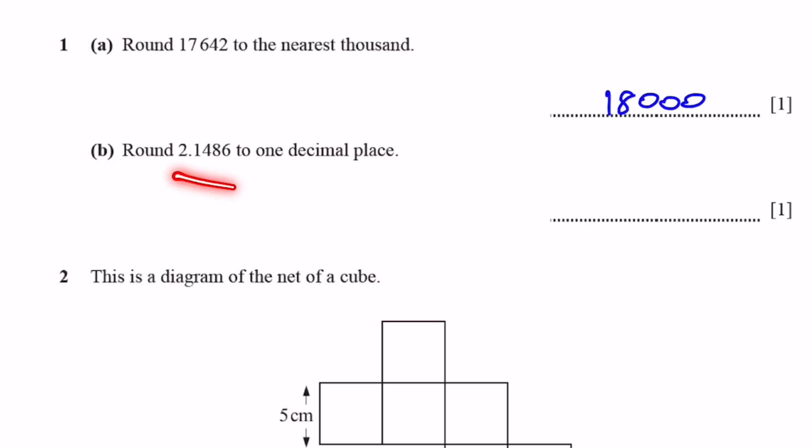Part b. Round 2.1486 to one decimal place. The first decimal place is 1, and the next one, which is the second one, that's 4, which is less than 5. That's why we don't need to add anything, we just get rid of the other parts after the first decimal place. So 2.1. That's the answer.